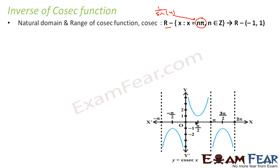Looking at the graph, cosec is not one-one and onto. To make it one-one and onto, we restrict the domain to one interval. If we take the interval minus π/2 to π/2 and draw lines there, every value in x has a unique output in y. So this is a valid interval — taking minus π/2 to π/2 makes the cosec function one-one and onto.